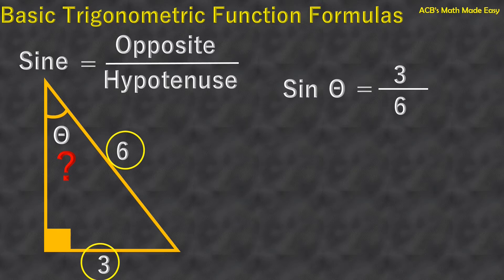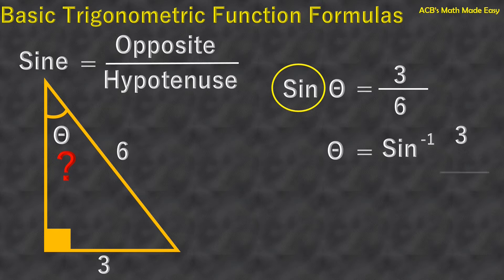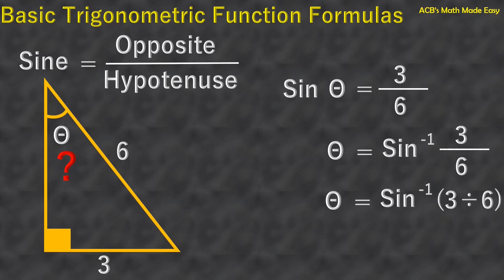Next step is to know the inverse function of sine so we can get the value of angle theta. Theta equals — what is the inverse of sine? Yes, arc sine. And this is its symbol. So theta equals arc sine 3 over 6, which means theta equals arc sine 3 divided by 6.